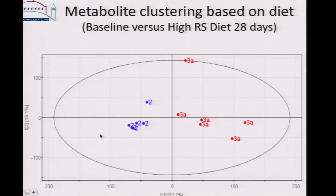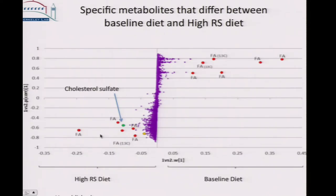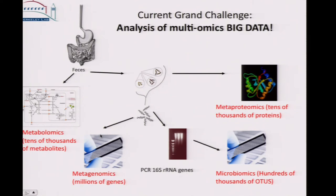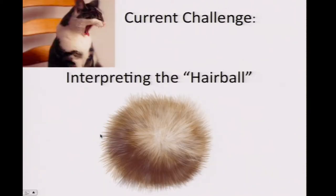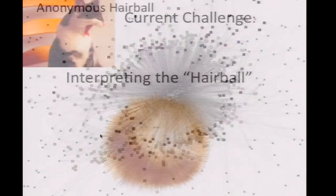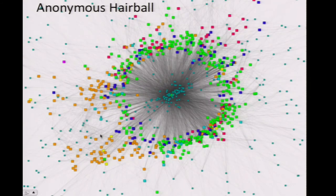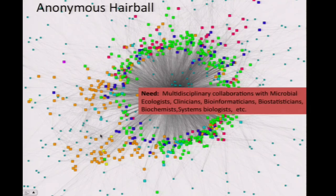So I need to mention where we should go from here. The current grand challenge is how to analyze all of this multi-omics big data — I'm thankful there's a call coming out for big data analysis, because this is an enormous amount of data. We generate it and we want to correlate it, but what we want to avoid is just interpreting the hairball — because often the correlation data comes back looking like an anonymous hairball. What we need is more multidisciplinary collaborations with microbial ecologists, clinicians, bioinformaticians, and biostatisticians to really dig down into this data.